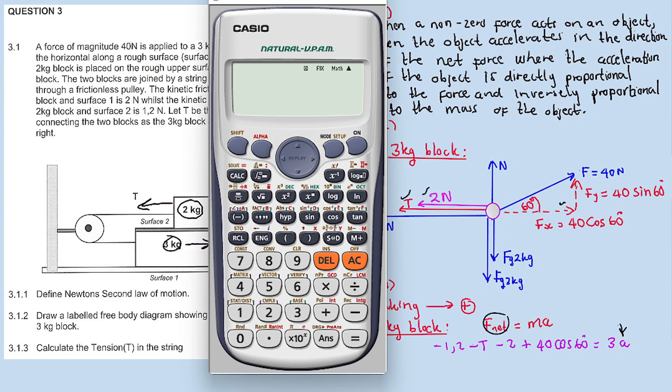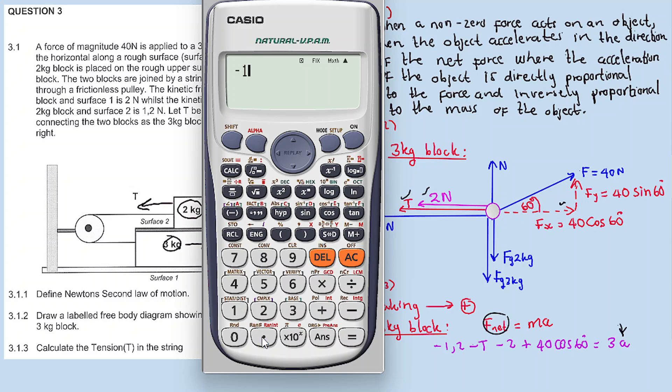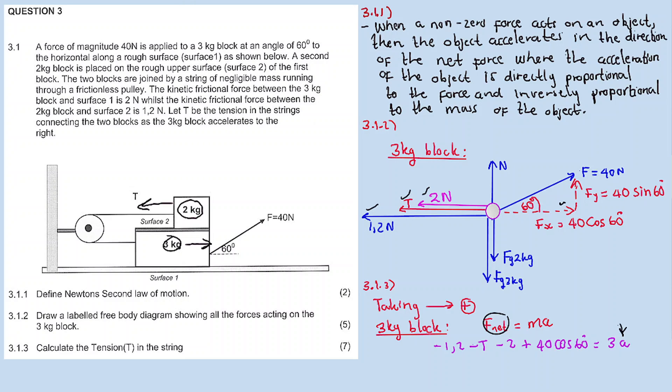We calculate the left-hand side, adding up all the like terms. Minus 1.2 minus 2 plus 40 cos 60 degrees equals 16.8. That's positive 16.8. The minus T has no like term, so it's 16.8 minus T equals 3 times acceleration. Let's call this equation 1.